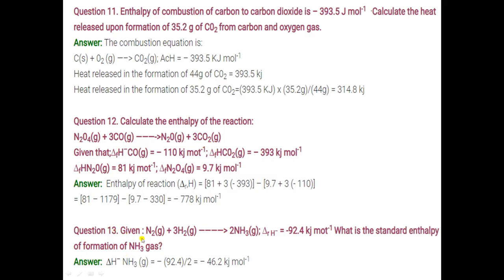Question number 13: given N₂ plus 3H₂ gives 2NH₃, and enthalpy of reaction is minus 92.4 kJ/mol. What is the standard enthalpy of formation of NH₃ gas? Standard enthalpy of formation is for 1 mole, but in this equation 2 moles of ammonia are formed and the value is given for 2 moles. So for 1 mole, divide by 2: minus 92.4 ÷ 2 = minus 46.2 kJ/mol.